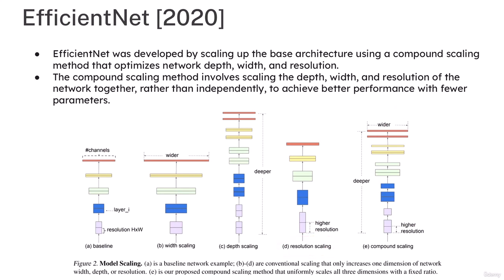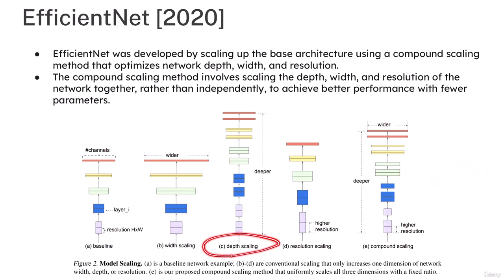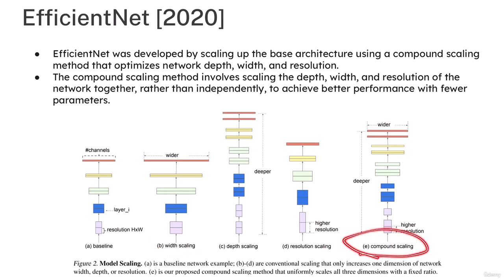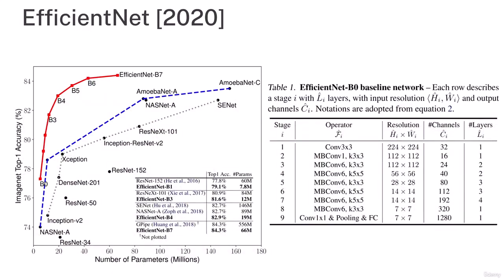You can control image resolution with resolution scaling. With compound scaling, you can simultaneously select a particular resolution — say 56×56 pixels — and also control the depth and width of your network. So all these things can be controlled simultaneously using compound scaling.